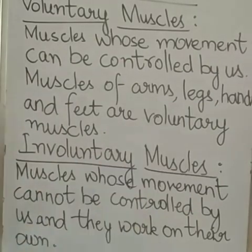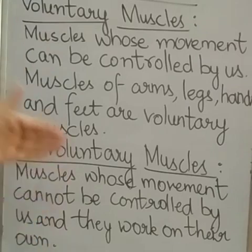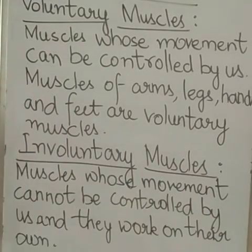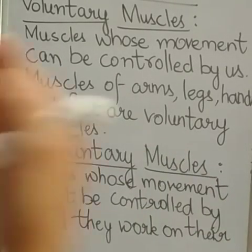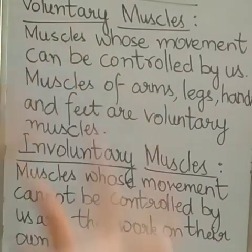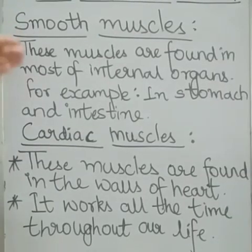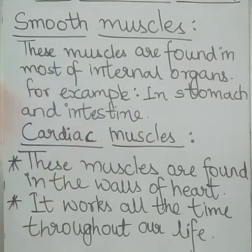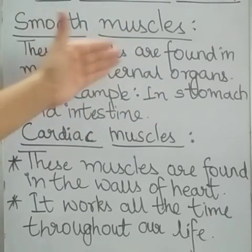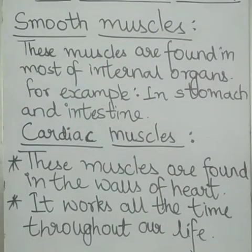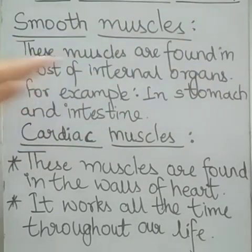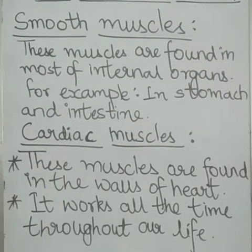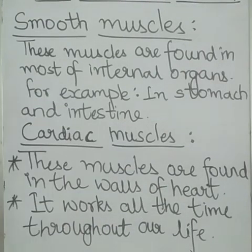Involuntary muscles are just the opposite of voluntary muscles — their movement cannot be controlled by us, and they work on their own. They are further divided into two types: smooth muscles and cardiac muscles. Smooth muscles are found in most internal organs, such as the stomach and intestine. The digestion of food is not controlled by us, so this is an involuntary muscle.